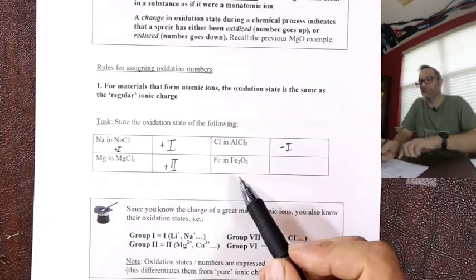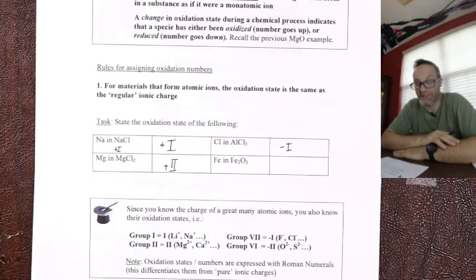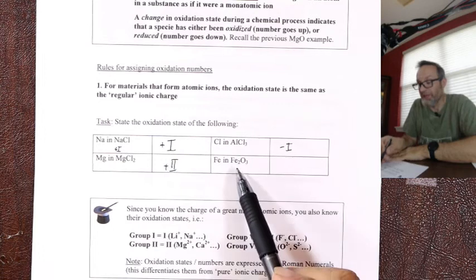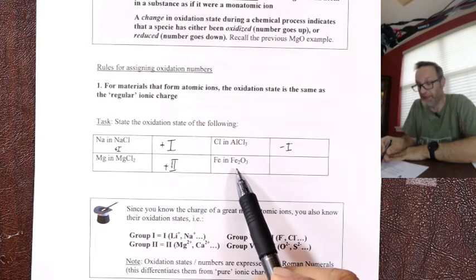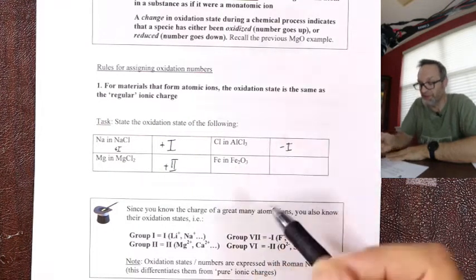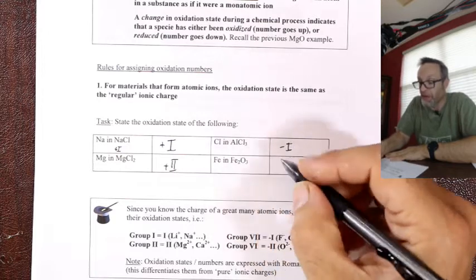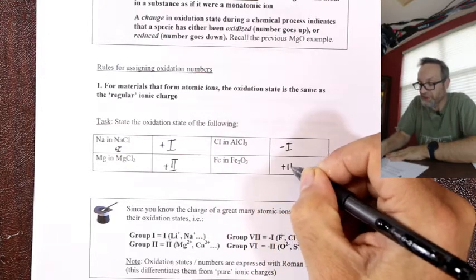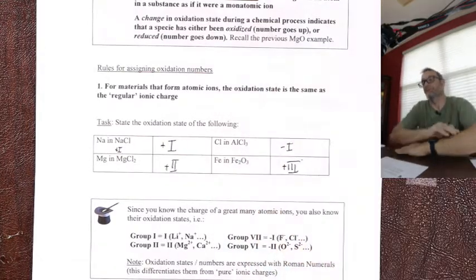If you did that rust extra credit, you can work out that iron is plus three in there — two threes are six, three twos are six. So that's iron(III), a plus three oxidation state for iron.